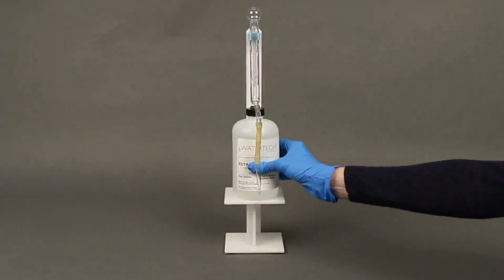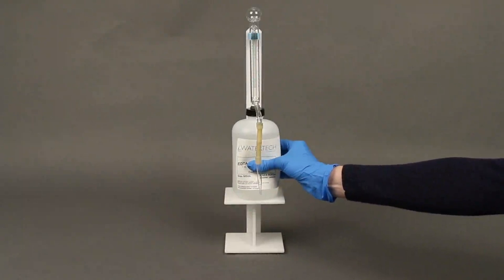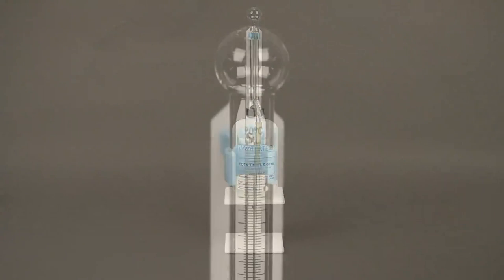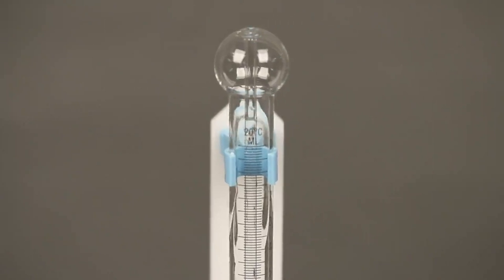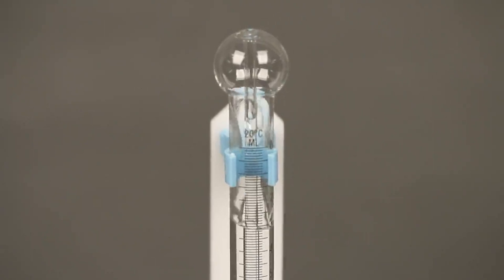Next, by squeezing the plastic bottle, force the hardness titrating solution to fill the burette to just above the zero mark. This allows the excess to drain automatically back into the plastic bottle reservoir.